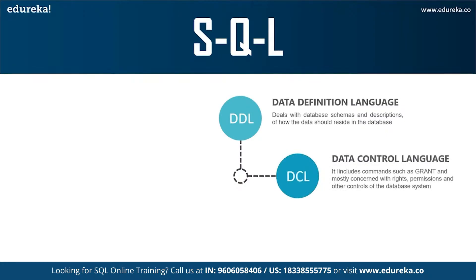Moving on to the next command: DCL — Data Control Language. It allows you to control access to the database. The main DCL commands are GRANT and REVOKE. GRANT gives user access privileges to the database, while REVOKE withdraws the user access privileges that were given using the GRANT command.